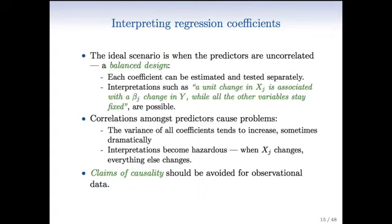But predictors are not usually uncorrelated in the data. For example, here we can expect, and we'll see actually, that the various amounts spent on the three kinds of advertising are correlated. So these kind of interpretations are difficult in observational data that are correlated. What problem does the correlation cause? The variance of all coefficients tend to increase, sometimes dramatically. In particular, imagine we have two predictors which are almost identical.